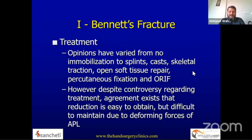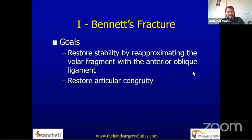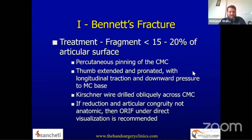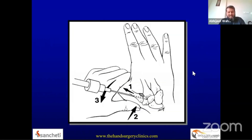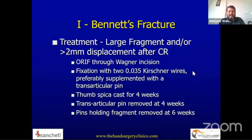Treatment varies from applying splints to cast, skeletal traction, and fixation. There is a large amount of controversy, but agreement exists that reduction is usually easy to obtain but difficult to maintain. The basic tenet of treatment is to restore stability and articular congruity, accomplished either by percutaneous fixation or open reduction and internal fixation. The basic maneuver is to reverse the deformity — correcting supination by pronating the metacarpal, applying axial traction, and reducing the metacarpal toward the beak fragment, then fixing with K-wires. If the fragment is large, open reduction and internal fixation with K-wires or screws is performed.